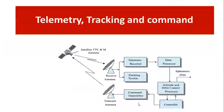In this particular picture, we have shown the satellite and its corresponding TTC and M antenna. We have two antennas: a receiving antenna and a transmitting antenna. The receiving antenna will receive signals from the satellite, and those received signals will be given to the telemetry receiver and tracking system. Telemetry data — that is, the tabulated received data — has to be processed.